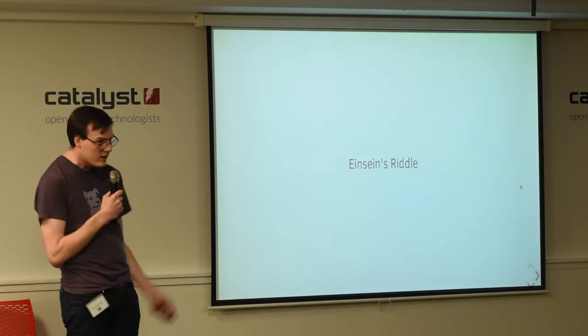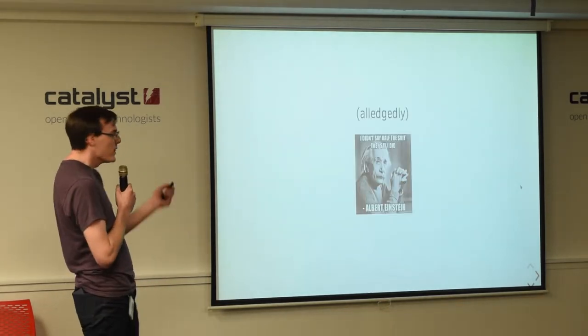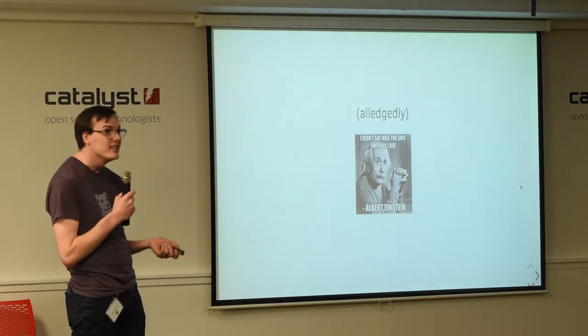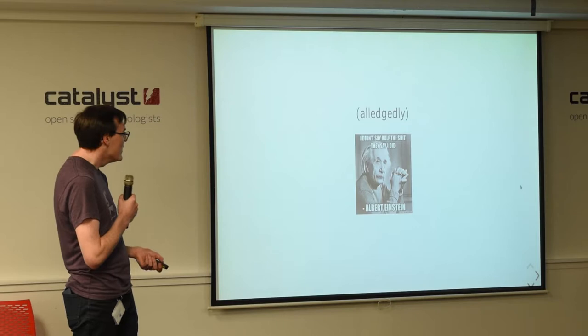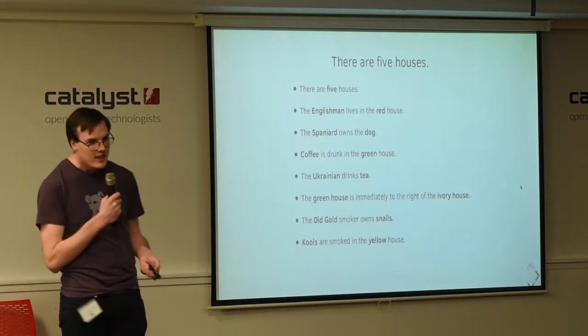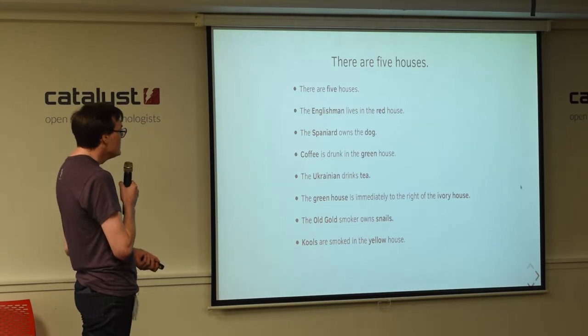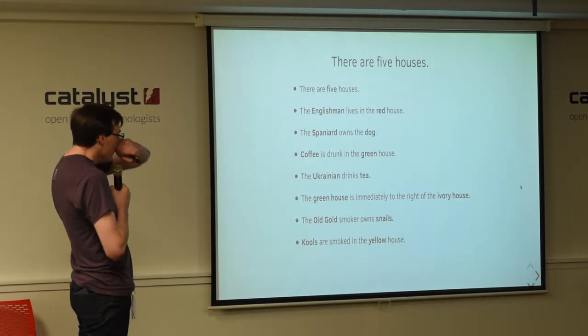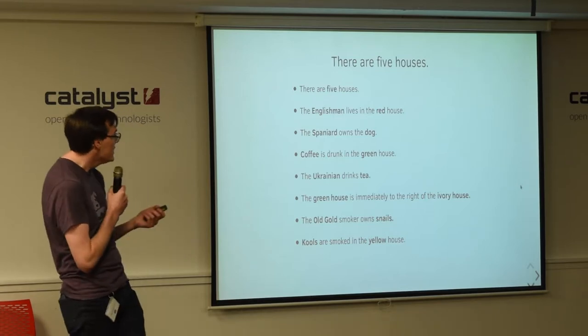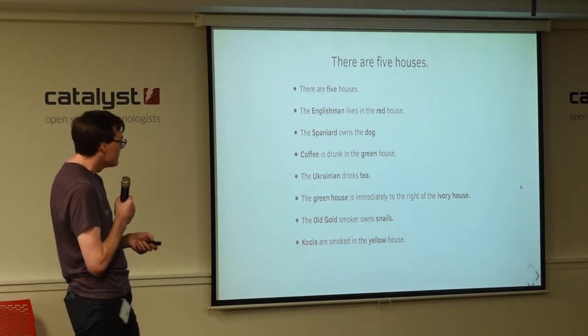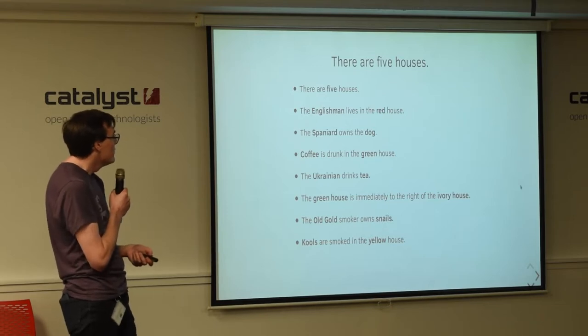I want to start with a riddle called Einstein's riddle, allegedly. It's one of those things that's attributed to Einstein but nobody can actually verify, but everyone calls it Einstein's riddle so we'll keep that. Now I won't spend too much time going through the details of the riddle at this stage, but I just want to introduce you to the nature of the riddle. So, there are five houses.